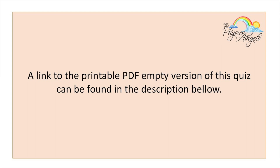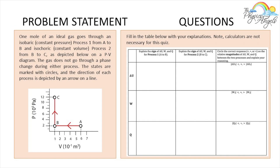This is the problem we're going to be working on today. One mole of an ideal gas goes through an isobaric constant pressure process 1 from A to B, and an isochoric constant volume process 2 from B to C, as depicted on a PV diagram. The gas does not go through a phase change during either process. The states are marked with circles and the direction of each process is depicted by an arrow. Fill in the table below with your explanations. Note, calculators are not necessary for this quiz.